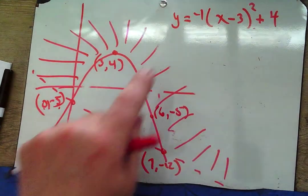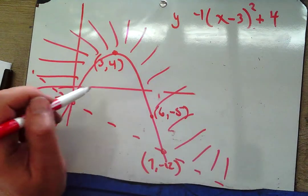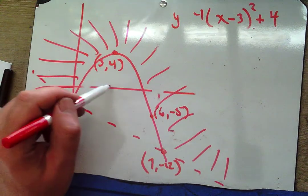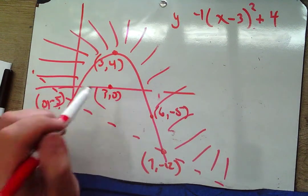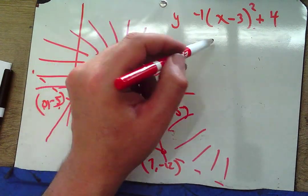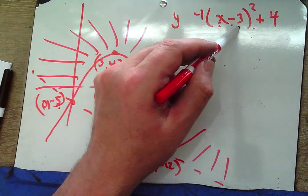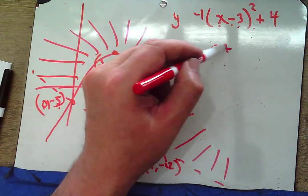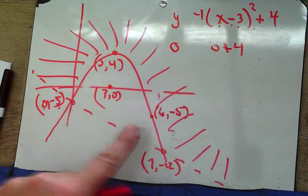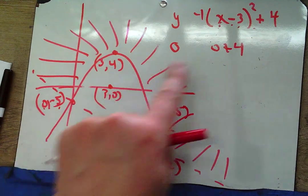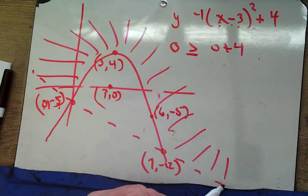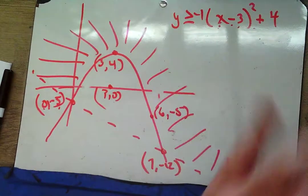For the inequality direction: the point (3,0) is inside the parabola. Plugging into y = −(x−3)² + 4 with x=3, y=0: 0 vs 4. Since there's no shading inside the parabola, (3,0) must be a 'no.' We need 0 < 4 to be 'no,' so the inequality is y < −(x−3)² + 4, meaning we shade outside/below.